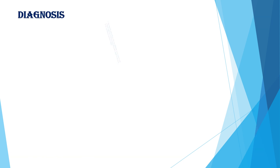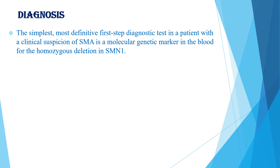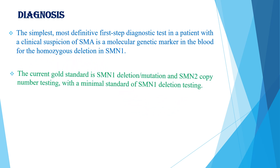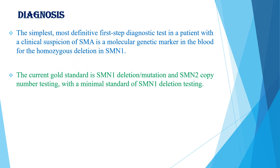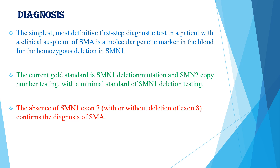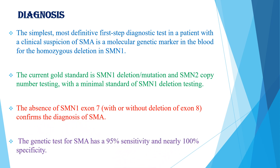When we see the diagnosis, the simplest and most definitive first step diagnostic test in a patient with clinical suspicion of SMA is a molecular genetic marker in the blood for the homozygous deletion in survival motor neuron 1. The current gold standard is SMN1 deletion or mutation and SMN2 copy number testing, with a minimal standard of SMN1 deletion testing. The absence of SMN1 exon 7, with or without deletion of exon 8, confirms the diagnosis of SMA. The genetic test for SMA has 90% sensitivity and nearly 100% specificity.